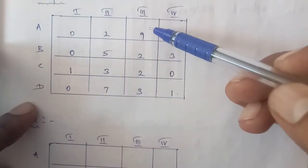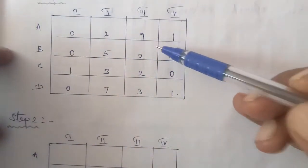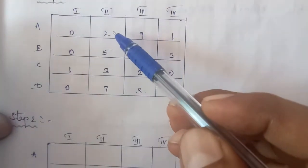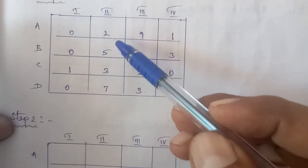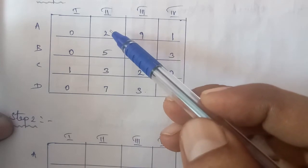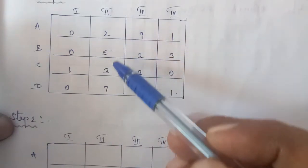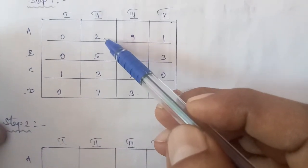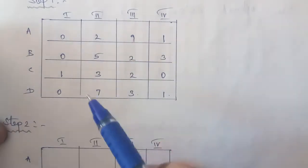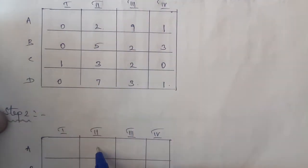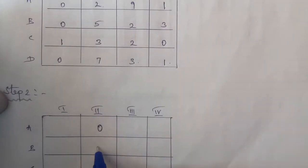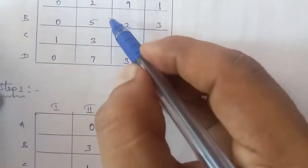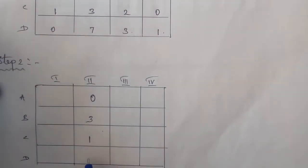Second column: least number is 2. Subtract 2 from each element of the second column. So: 2 minus 2 equals 0; 5 minus 2 equals 3; 3 minus 2 equals 1; 7 minus 2 equals 5.